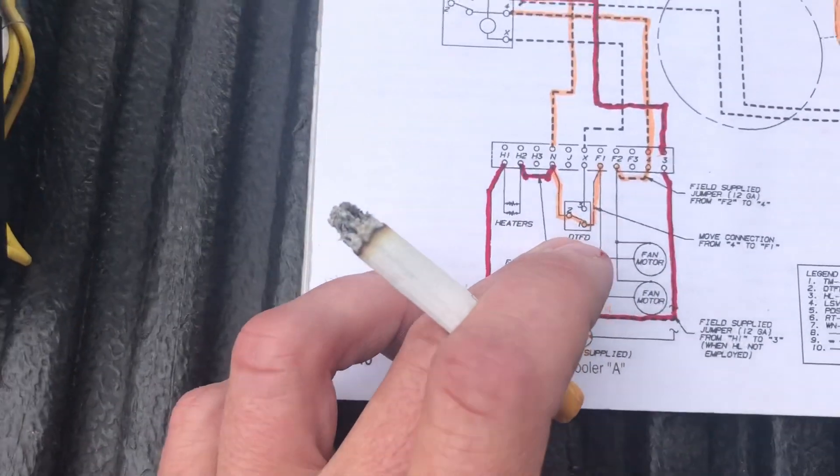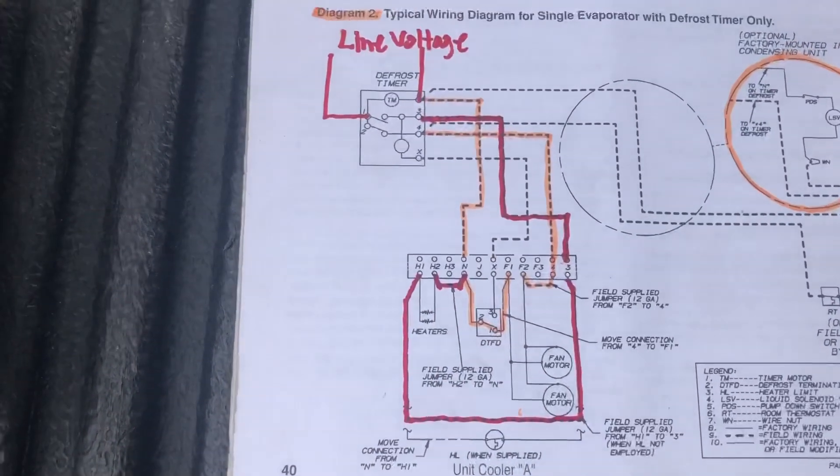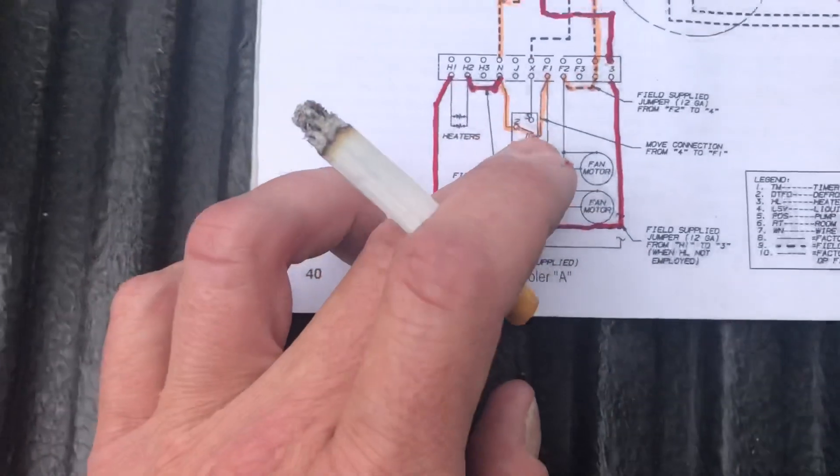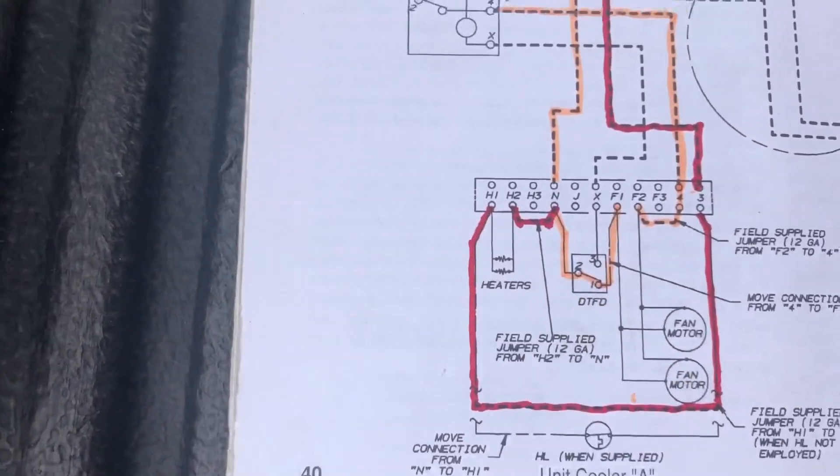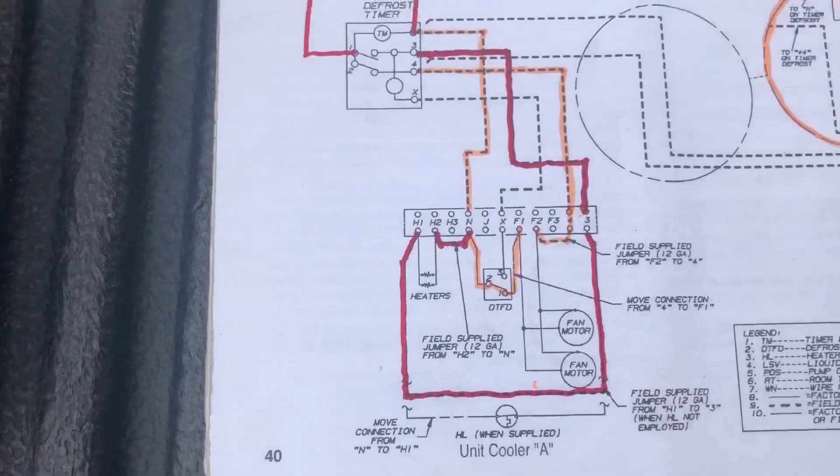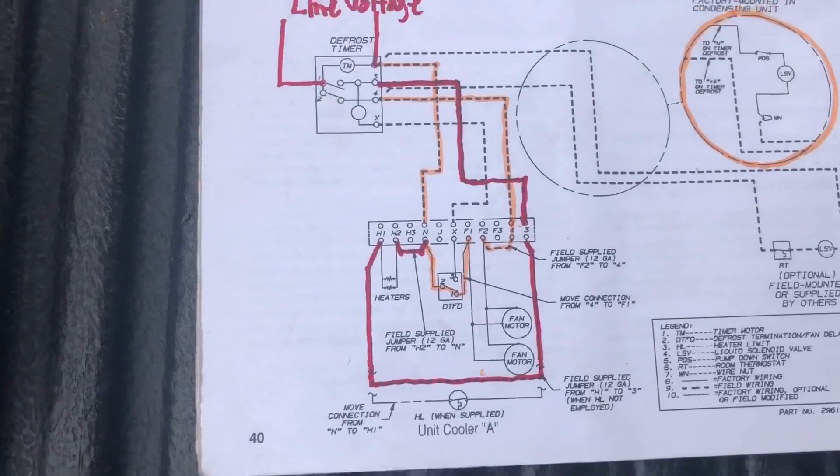Sometimes it's really confusing if this defrost termination is bad, you don't know your fans aren't coming on. But normally all you do is jump out this here, the 2 and 1 on it, which would be the red and your black wire. That's how you can diagnose that to see if your fans will work.